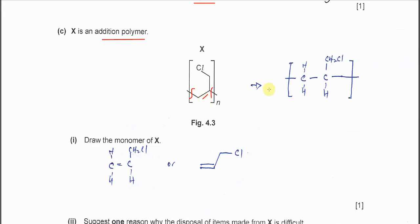The monomer structure looks like this: CH2-CH with CH2Cl attached. You can convert the polymer structure to show it expanded as CH2-CH(CH2Cl), repeated. After breaking bonds and adding the double bond between carbons, you get the monomer.